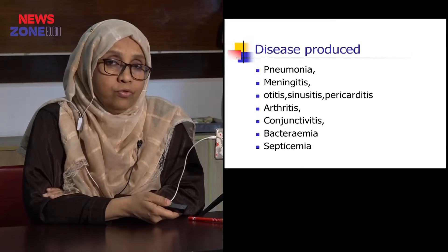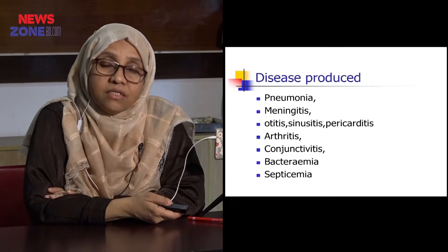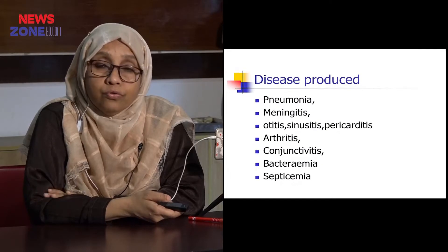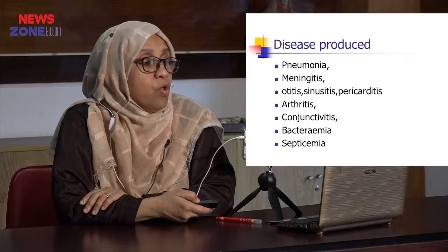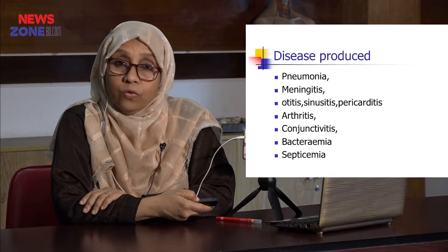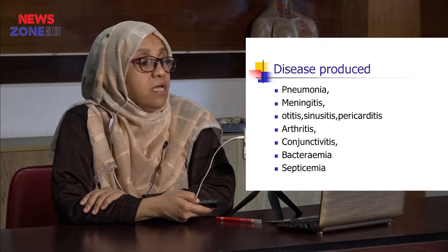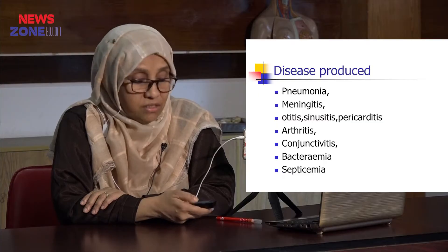What diseases do they produce? The primary important disease Streptococcus pneumoniae produces is pneumonia. They can also cause meningitis because of their invasiveness and ability to evade the local immune system at secretory surfaces. Additionally, they can cause otitis media, sinusitis, meningitis, pericarditis, arthritis if they enter the blood and travel to joints, conjunctivitis, bacteremia, and septicemia.